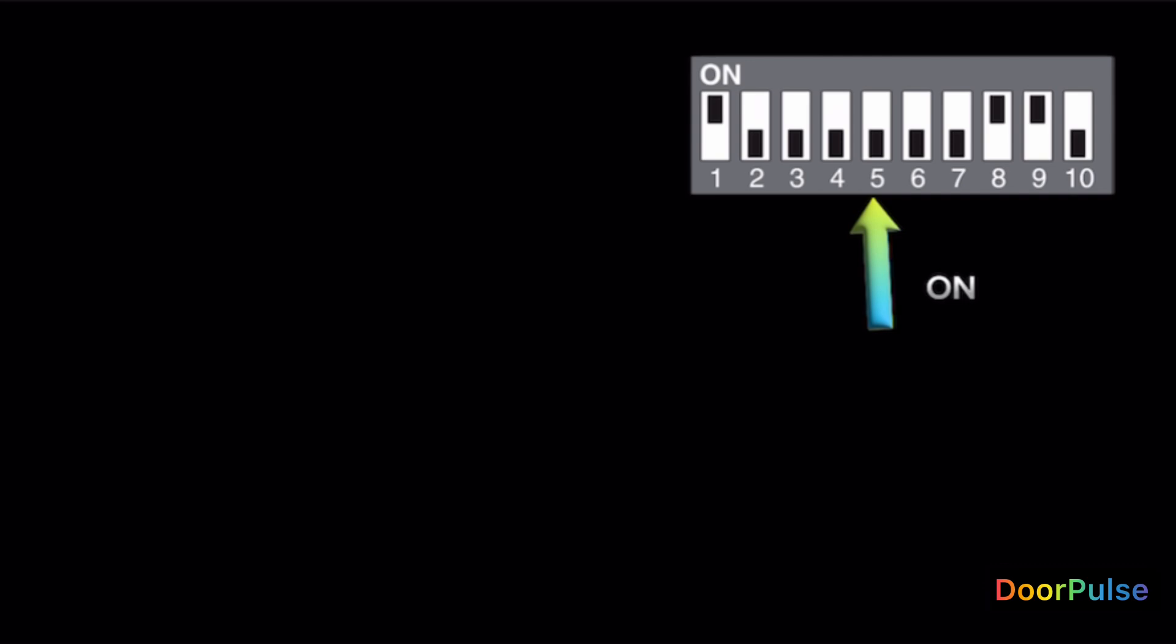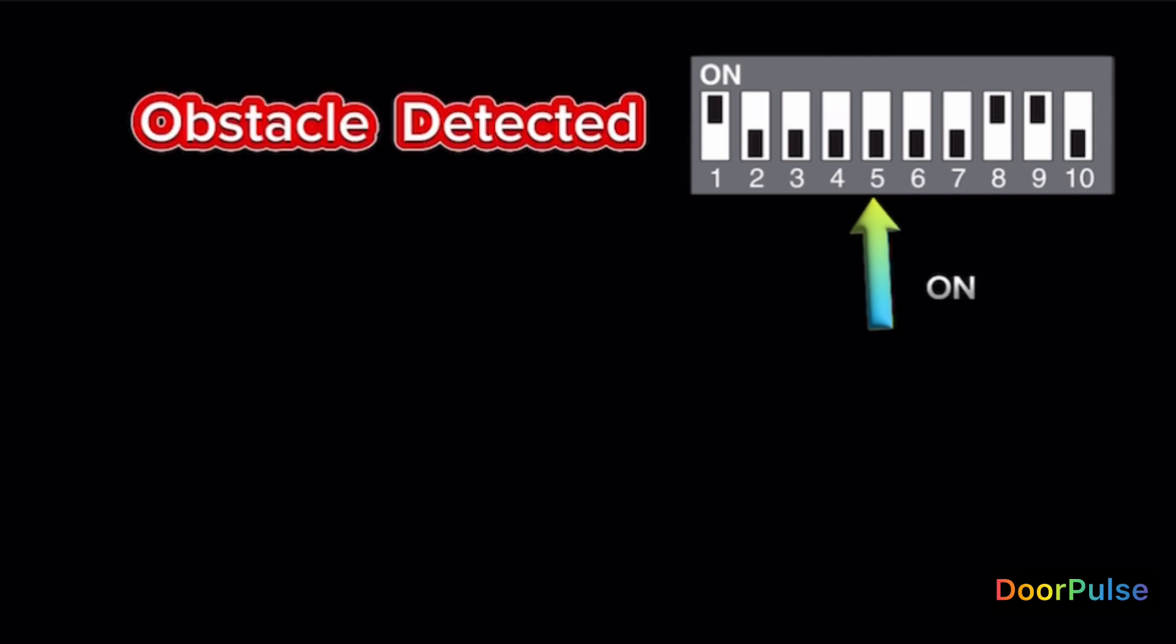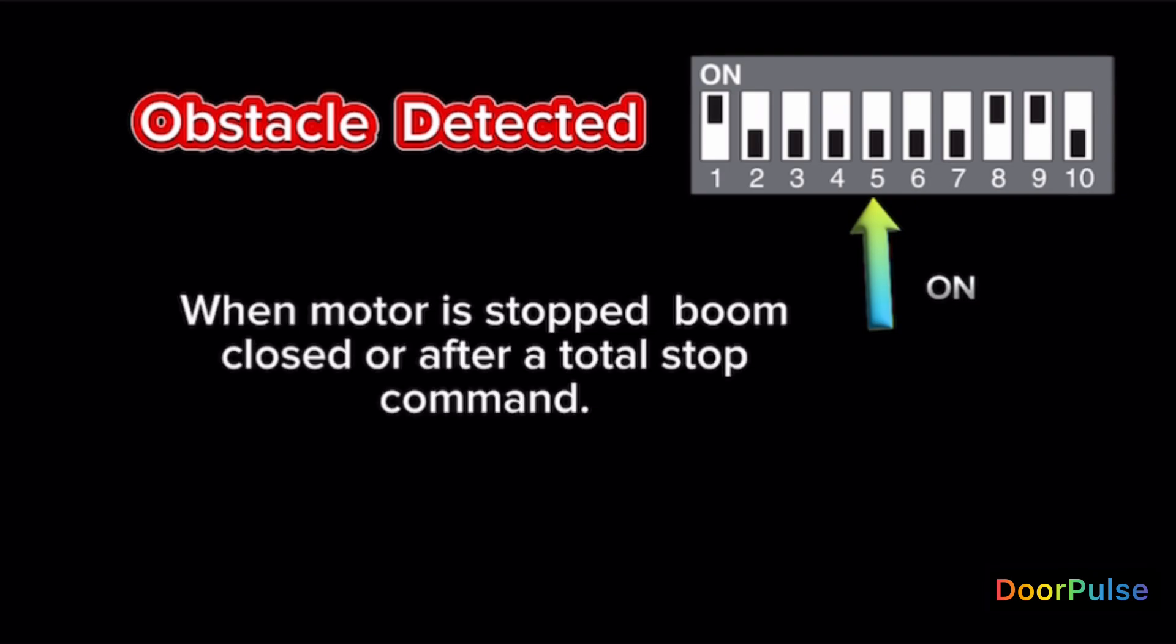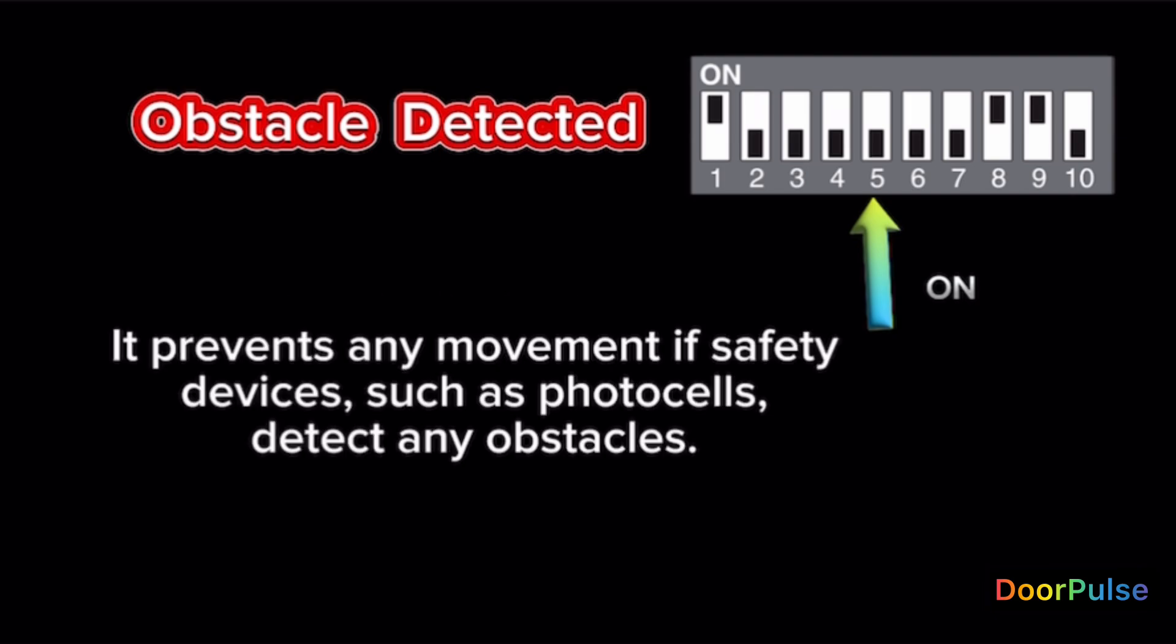Switch 5 ON. Obstacle detected. When motor is stopped, boom closed, or after a total stop command, it prevents any movement if safety devices such as photocells detect any obstacles.